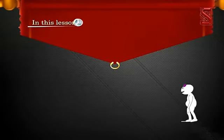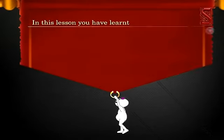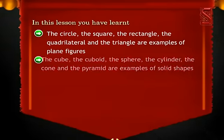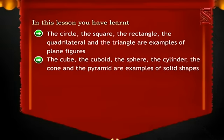In this module you have learnt the circle, the square, the rectangle, the quadrilateral, and the triangle are examples of plane figures. The cube, the cuboid, the sphere, the cylinder, the cone, and the pyramid are examples of solid shapes. Plane figures are of 2 dimensions (2D) and the solid shapes are of 3 dimensions (3D).